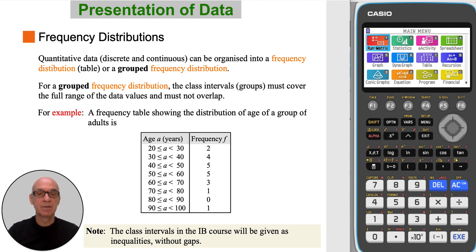Quantitative data can be organized into a frequency distribution or a grouped frequency distribution. For a grouped frequency distribution, the class intervals, or the groups, must cover the full range of the data values and must not overlap. For example, a grouped frequency table shows the distribution of age of a group of adults. The ages range from 20 to 100, with each class interval being 10 years.